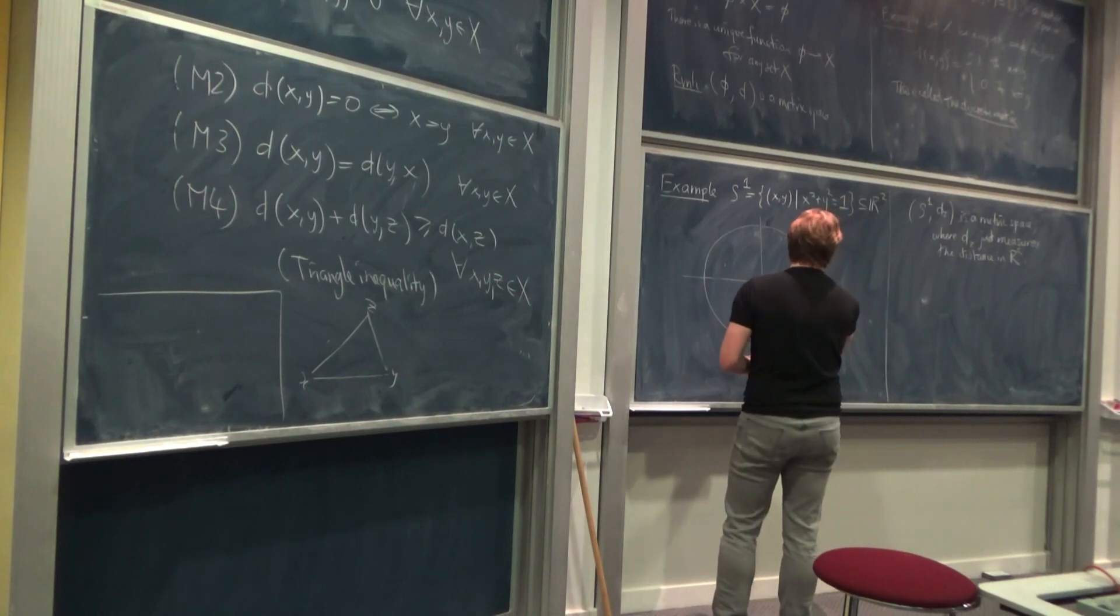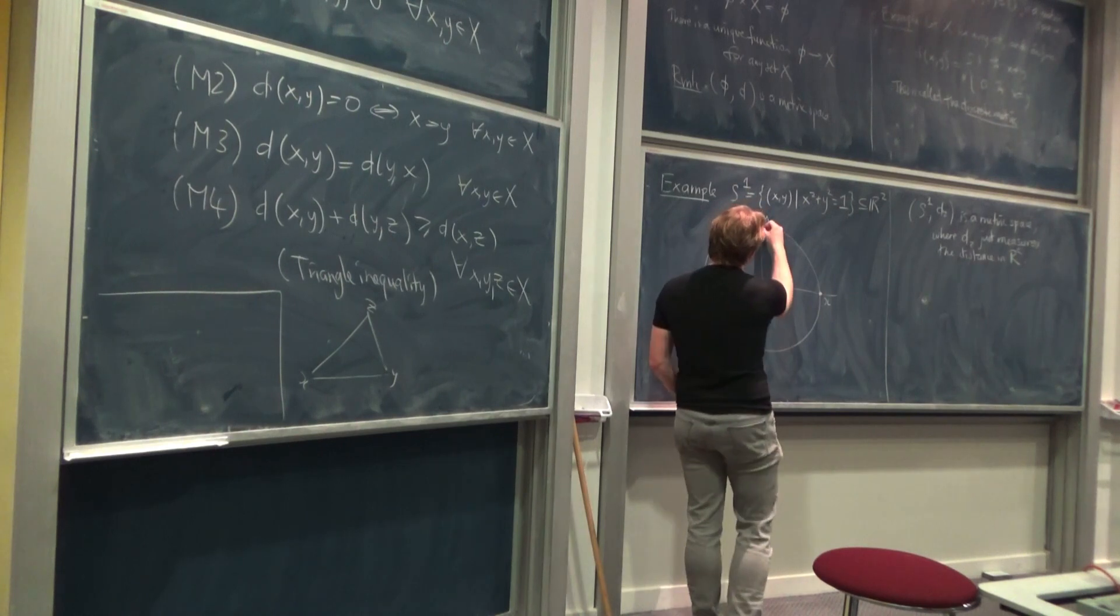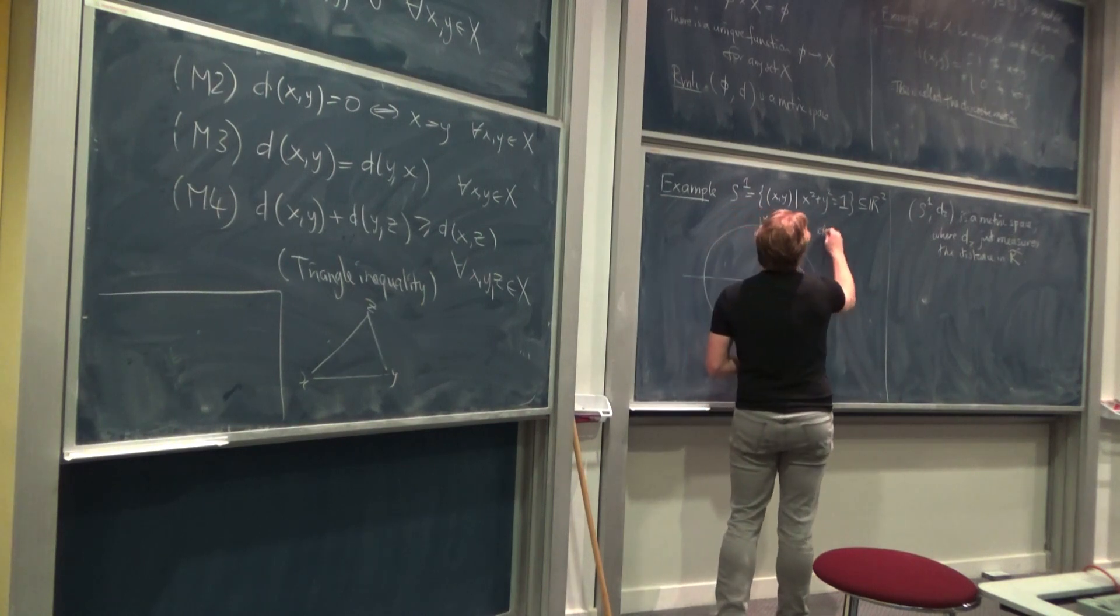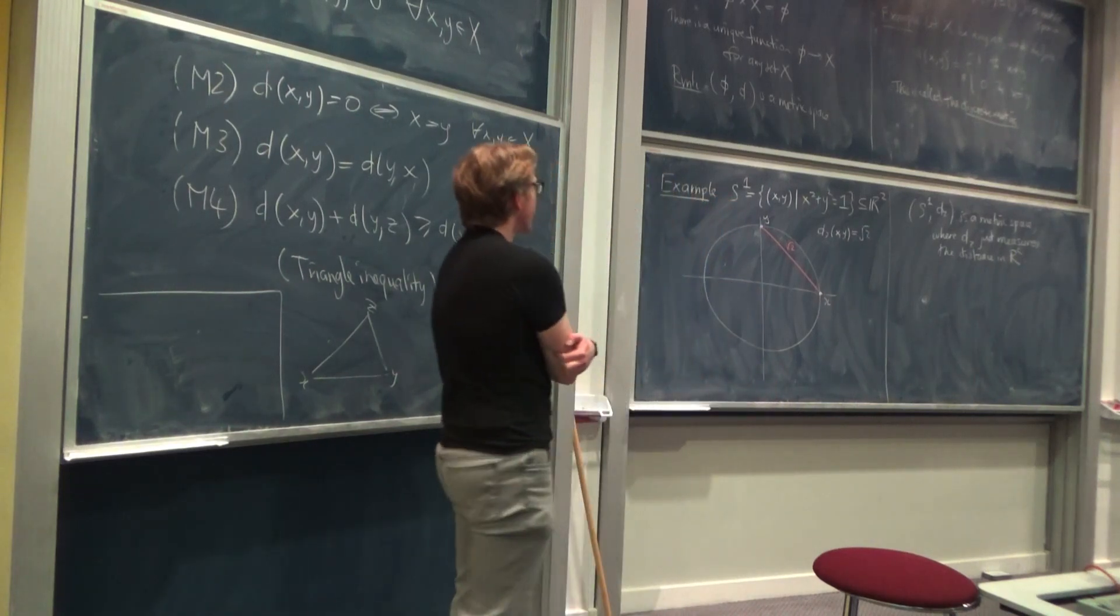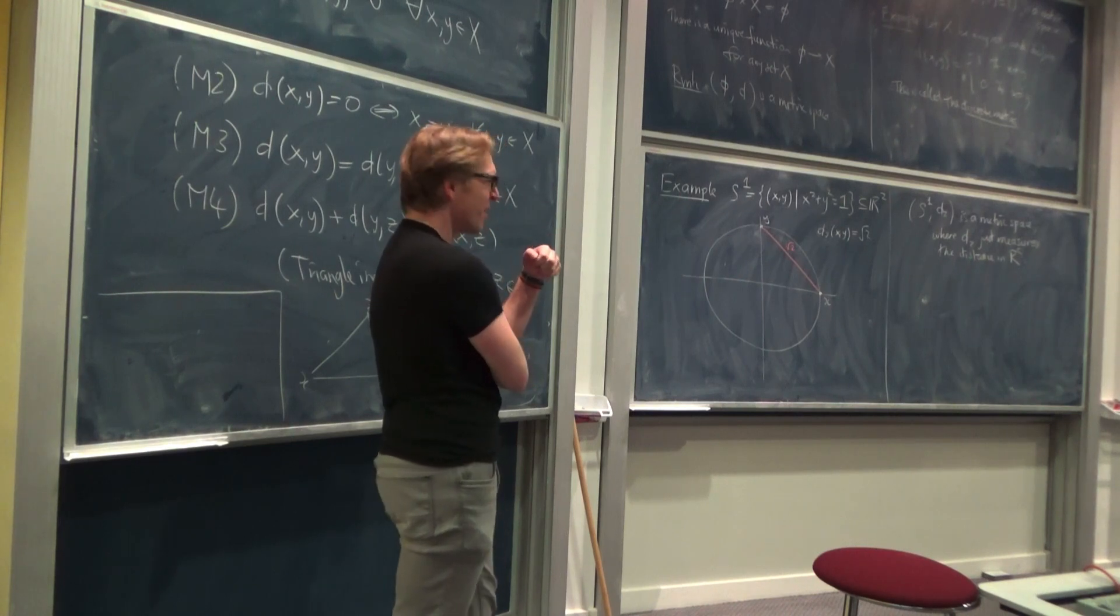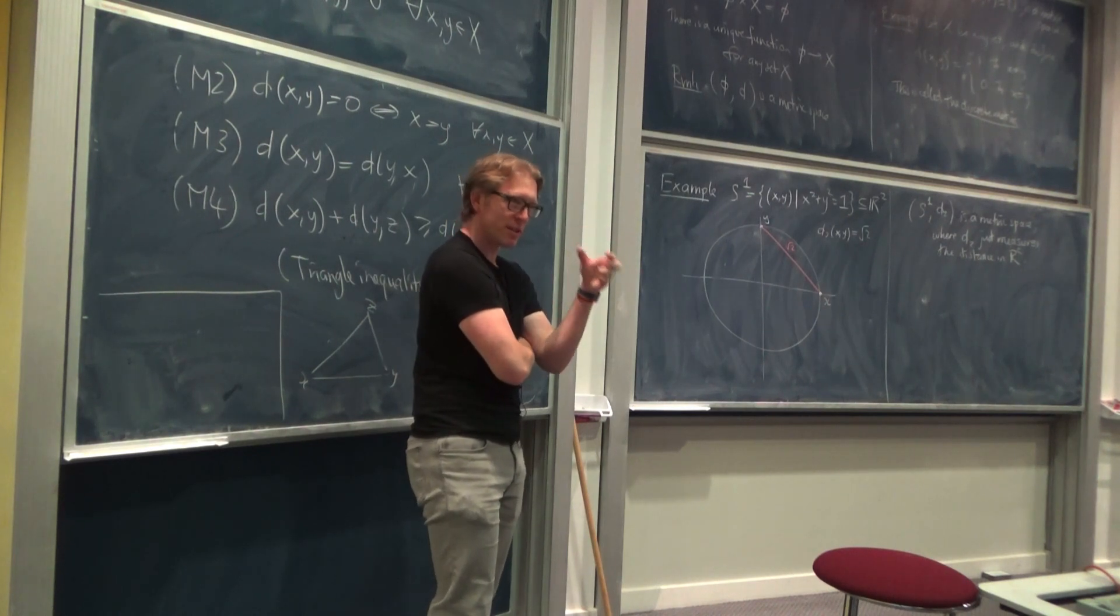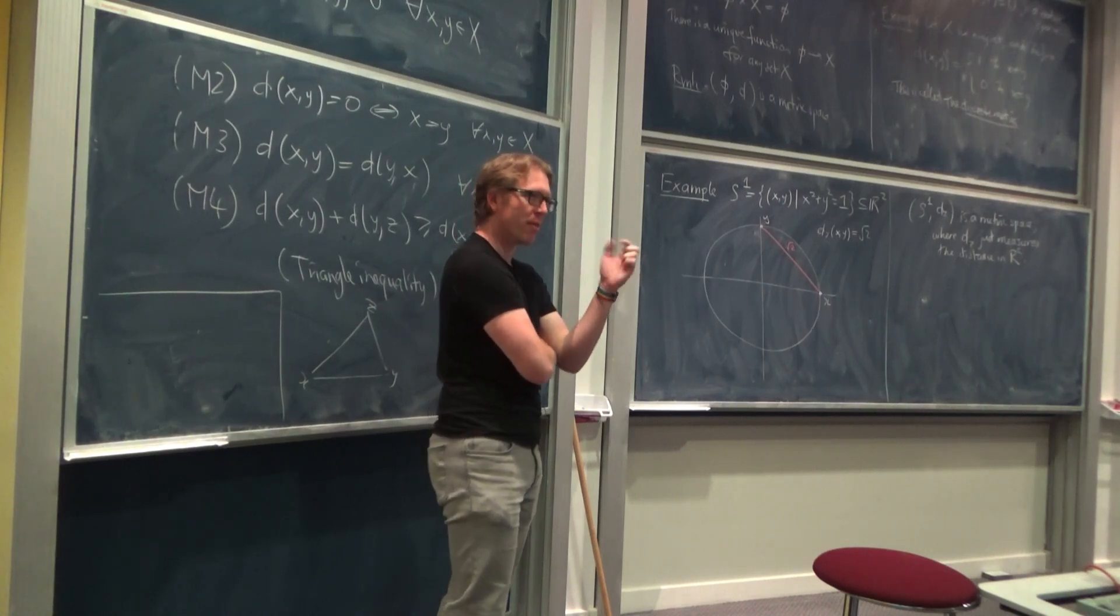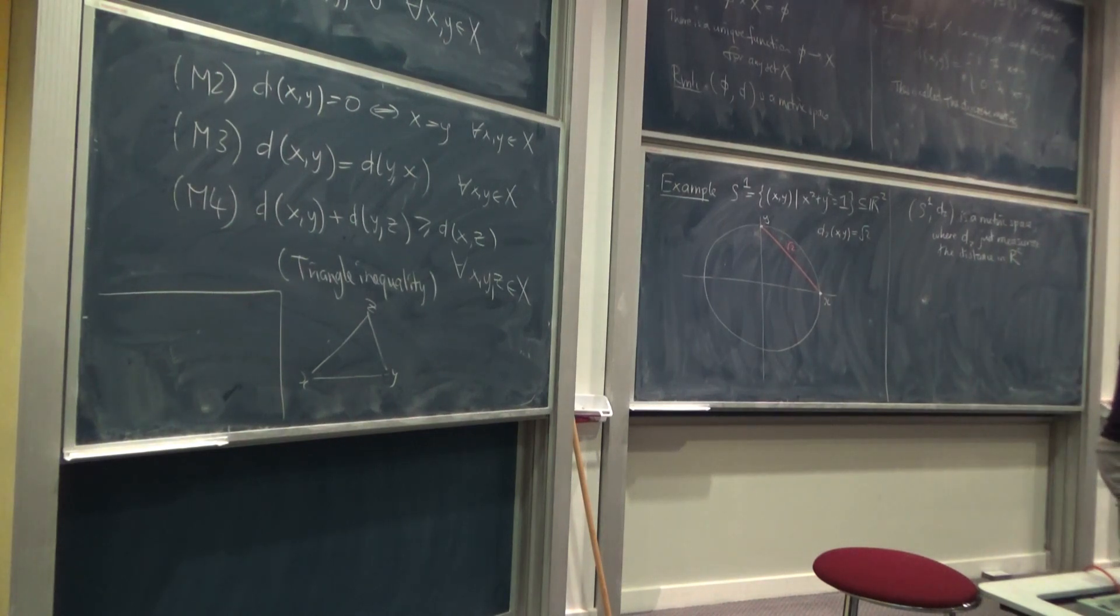So S^1, D_2 is a metric space where D_2 just measures the distance in R^n. Okay, so that's an exercise to check that any subset acquires a metric. It's in the notes. So what's that saying? It's saying that if I take two points, X and Y in the circle, then the distance between them, well, that's just root two, right? And that's the metric that I'm putting on S^1 by using the restriction of the metric on R^2, but it's probably not what we were expecting, right?